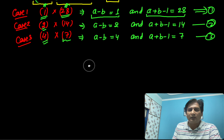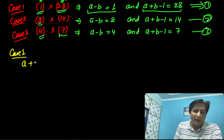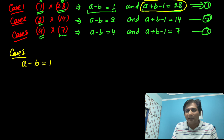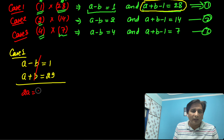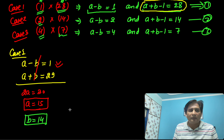Let us solve Case 1. The equations are A minus B equals 1 and A plus B equals 29. Adding by elimination method: 2A equals 30, so A equals 15. Substituting back, B equals 15 minus 1, so B equals 14.